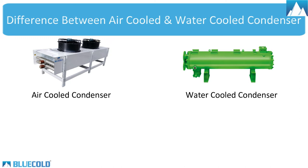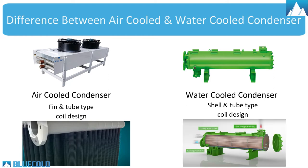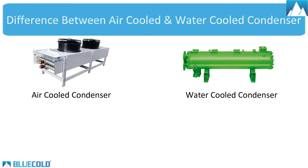2. Material of Manufacturing: Air-cooled condensers have fin and tube-type coil with axial fans installed for cooling, whereas in water-cooled, it has shell and tube-type condenser in which water flows inside the tubes.